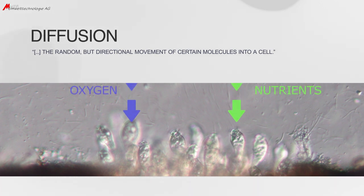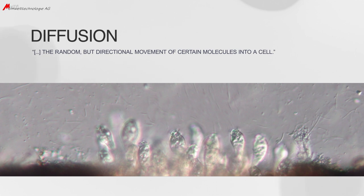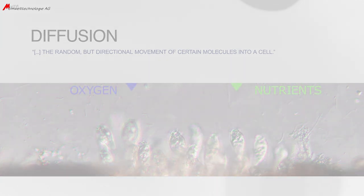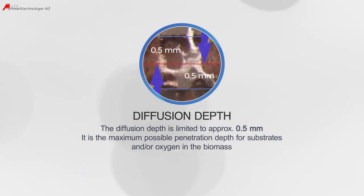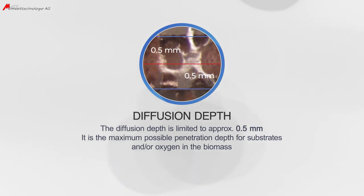Substrate refers to the pollutants present in the water, which are to be degraded by the microorganisms. A sufficient diffusion is an essential factor for the removal performance of active biomass. The diffusion depth is limited to approximately 0.5 mm, which can also be found in related technical literature. The term diffusion depth means the limit of a biofilm layer thickness up to which the biofilm can still be sufficiently supplied with nutrients and oxygen.